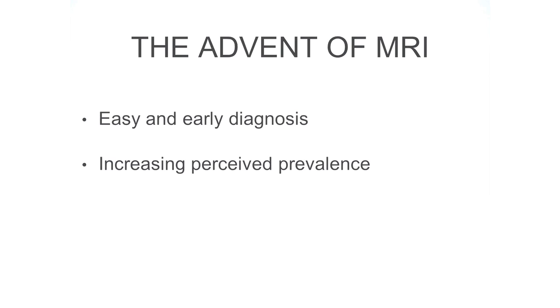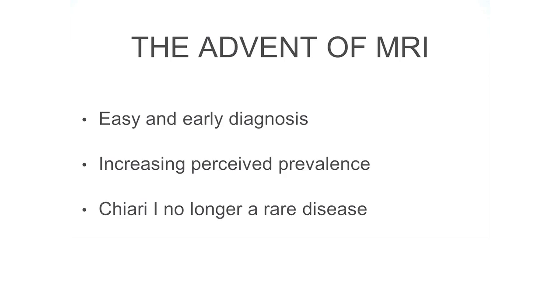Since it became easier to diagnose Chiari I malformation, the perceived prevalence became higher. Prevalence is how many patients affected by Chiari I malformation are in a population of 100,000 people. The more people were diagnosed with Chiari, the higher the prevalence became, and Chiari stopped being a rare disease back in the mid-80s. Right now there are probably 2 million people affected by Chiari I malformation in the United States alone.